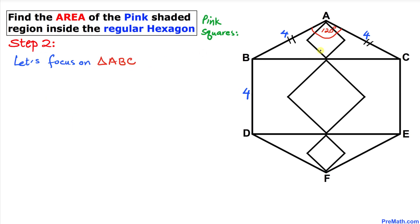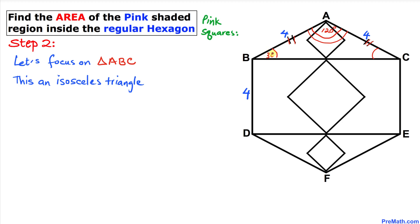Let's focus on triangle ABC. This triangle is an isosceles triangle because the two side lengths are equal. The angle opposite to AC equals the angle opposite to AB. Since the angles of a triangle sum to 180 degrees, and we have 120 degrees at angle A, we are left with 60 degrees, so angle B and angle C are both 30 degrees.